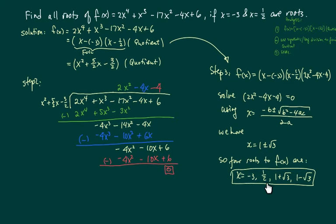So there are the four equations, four roots for the solution to the f(x): minus three, one-half, 1 plus radical 3, and 1 minus radical 3.